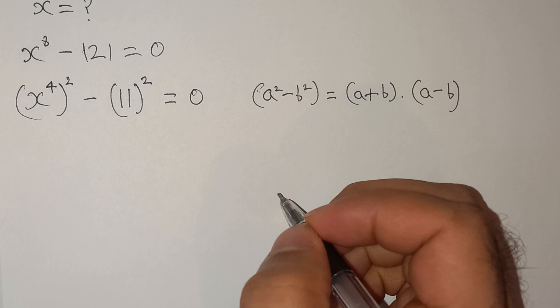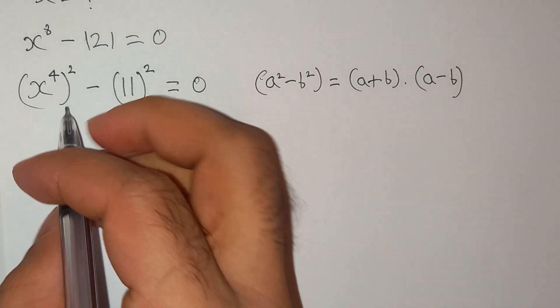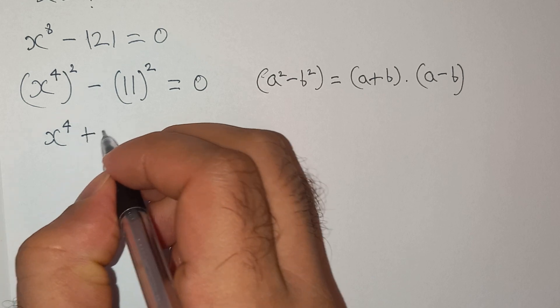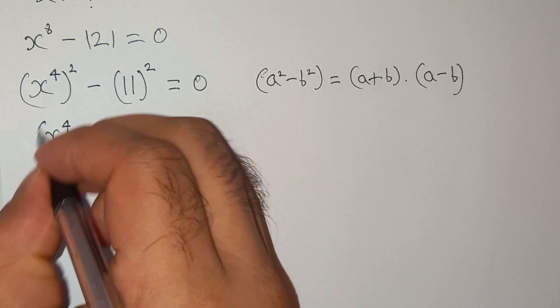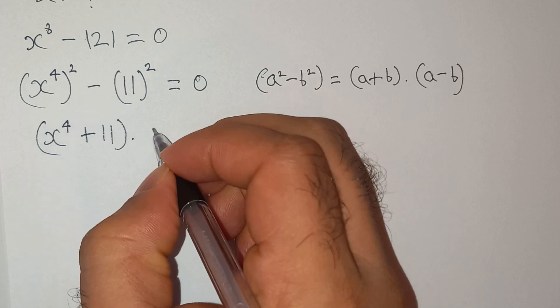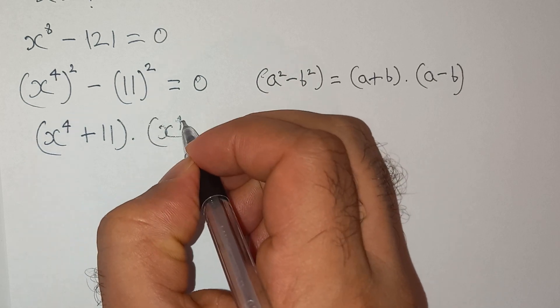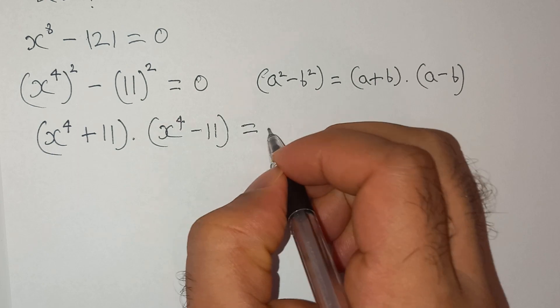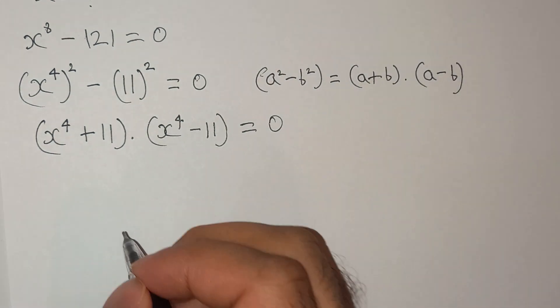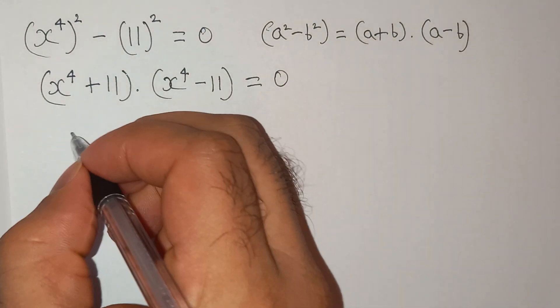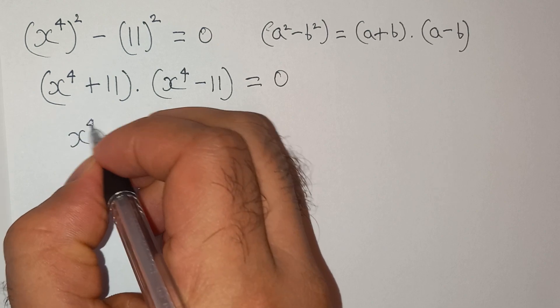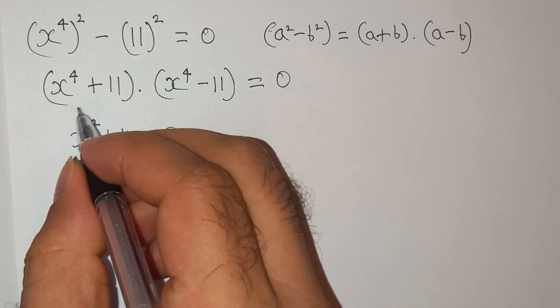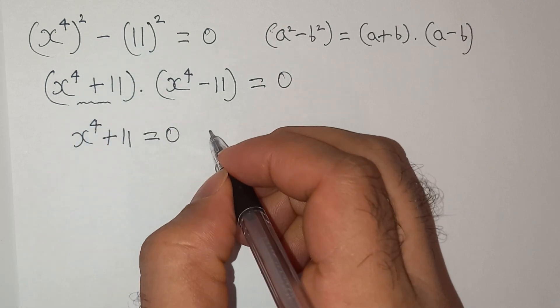Okay, so we can write this as x power 4 plus 11 multiplied by x power 4 minus 11 equals to 0. So from this we can say that either x power 4 plus 11 equals to 0, that is this term, or...